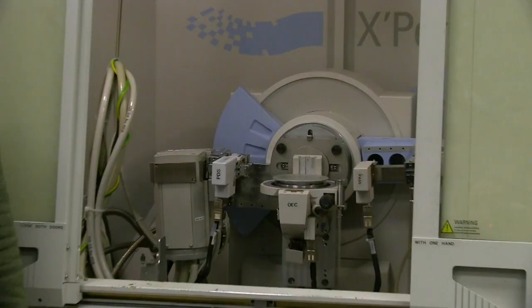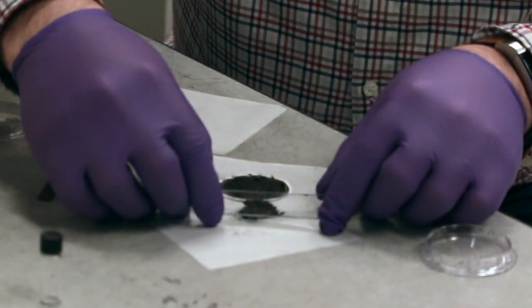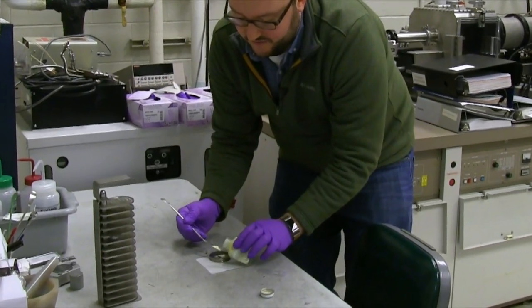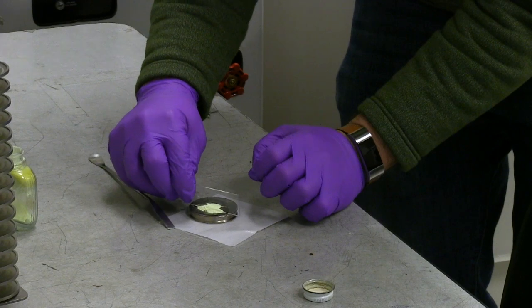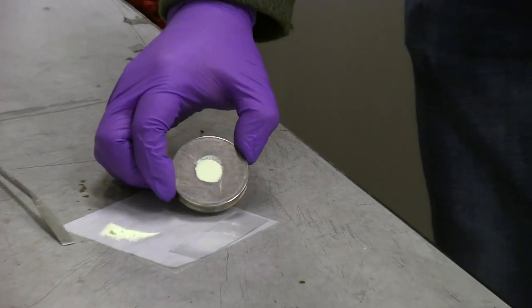A primary use of the materials research laboratory X-ray facility is powder diffraction. To prepare a powder sample, we have to put it into a cavity and make sure that the sample is as flat as possible.